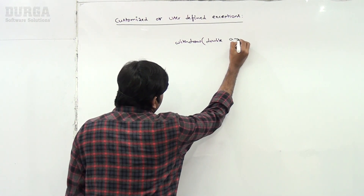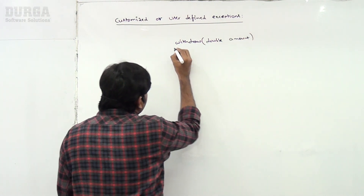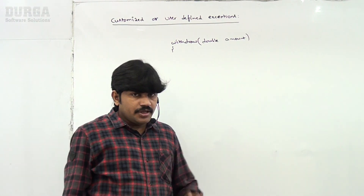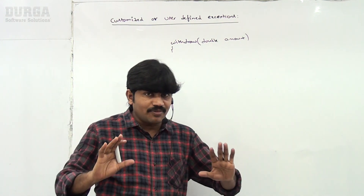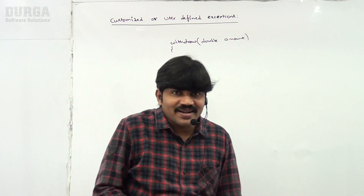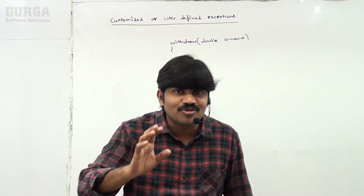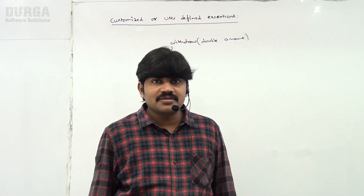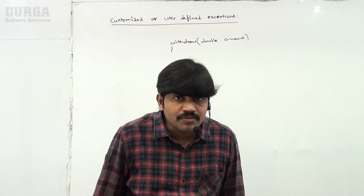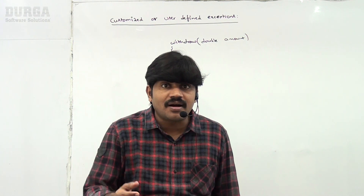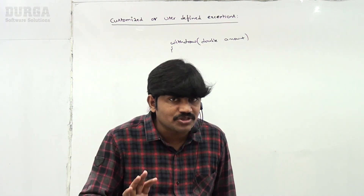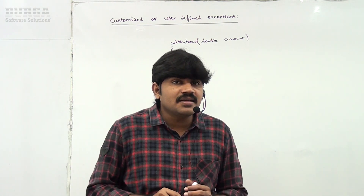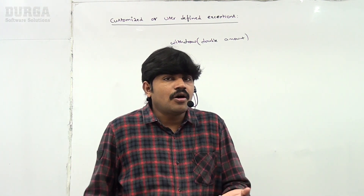Assume the amount is of type double. Assume that in my account a balance of 10,000 is there, but I am trying to withdraw 20,000 rupees. Is it possible? No chance at all — the balance is 10,000 only but I am trying to withdraw 20,000 rupees.